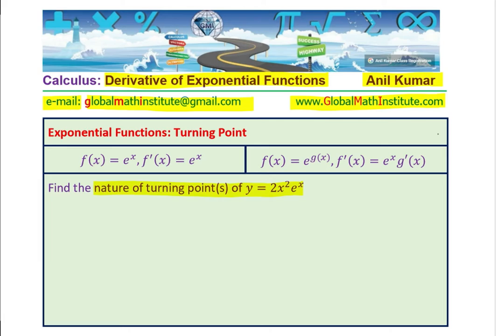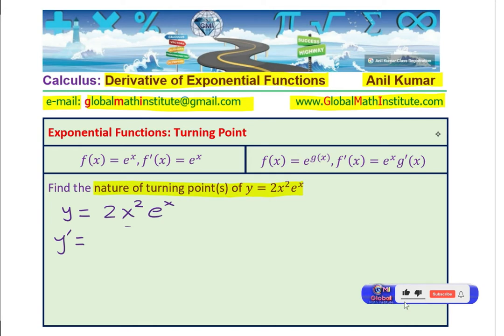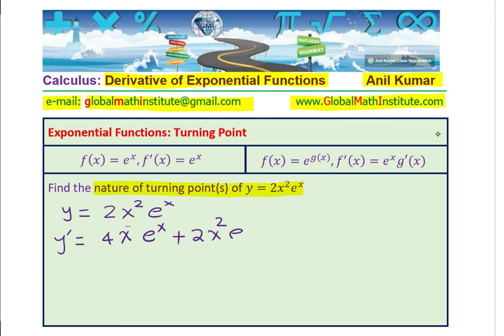Now let's look into the solution. We begin by writing the equation: y equals 2x squared e to the power of x. We need to find the nature of turning points, so first we find the derivative or gradient. Using the product rule: derivative of 2x squared is 4x, times e to the power of x, plus 2x squared times the derivative of e to the power of x, which is e to the power of x.